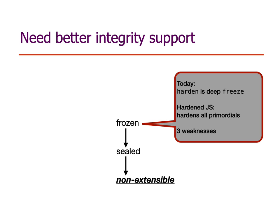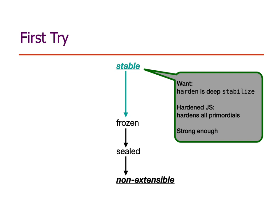However, with regard to the goals of Harden, there are three weaknesses we've encountered. In order to address these weaknesses, we started off by thinking in terms of proposing one integrity level called stable, where stable would imply frozen. Harden would then, instead of freezing at each step of the property graph walk, would stabilize at each step, so that all the primordials would be hardened, and stabilize would address the three weaknesses and be strong enough for all the purposes we've identified.